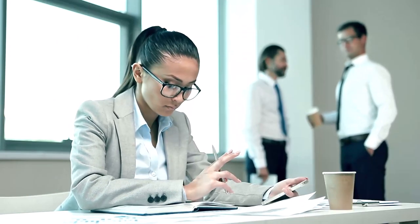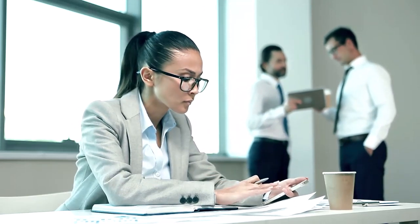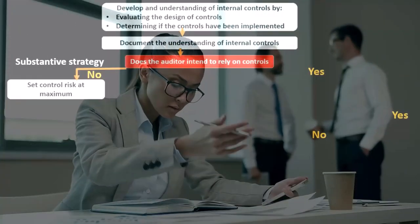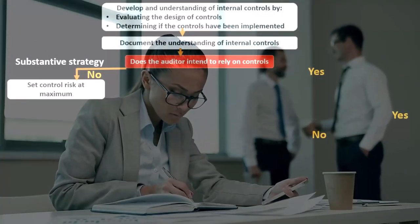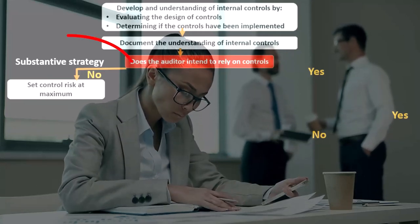What are we going to do then? We're going to do a substantive strategy, meaning we're going to set control risk at the maximum. We're going to say control risk is high, meaning there's a high risk that the internal controls set up by the organization will not detect a material misstatement.